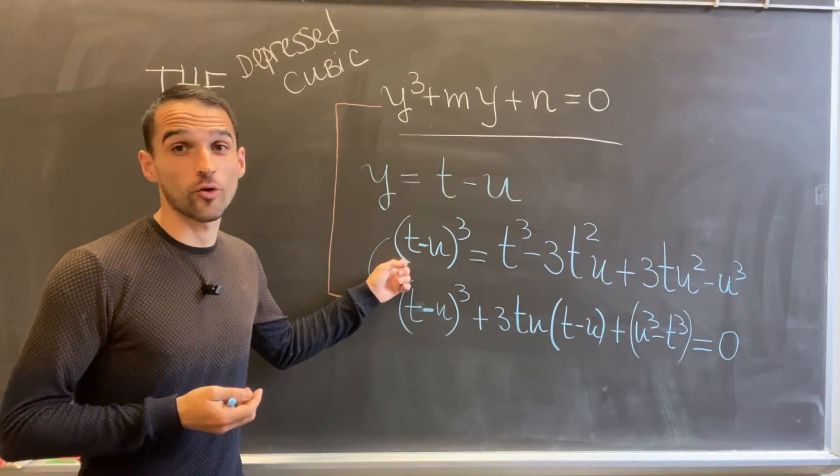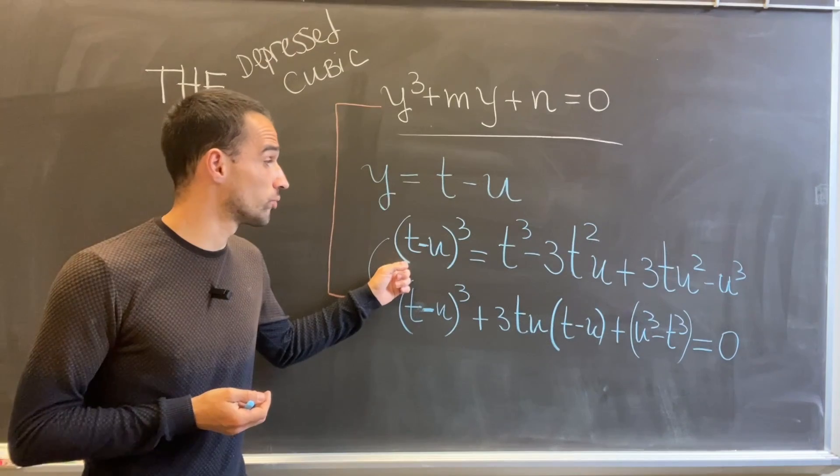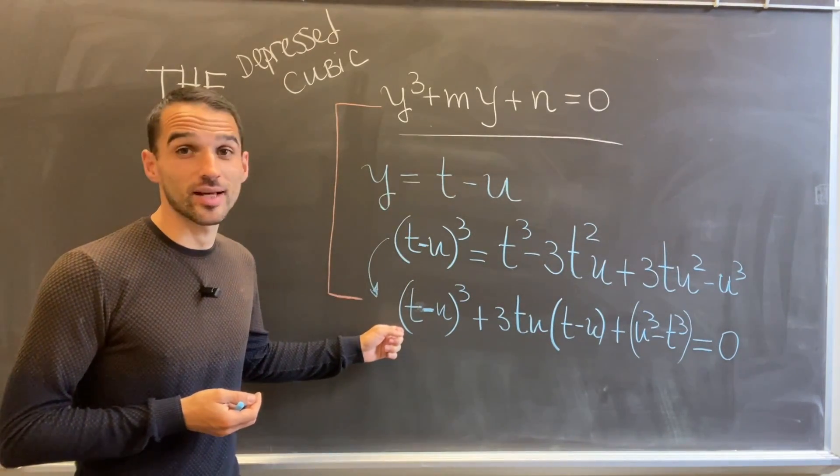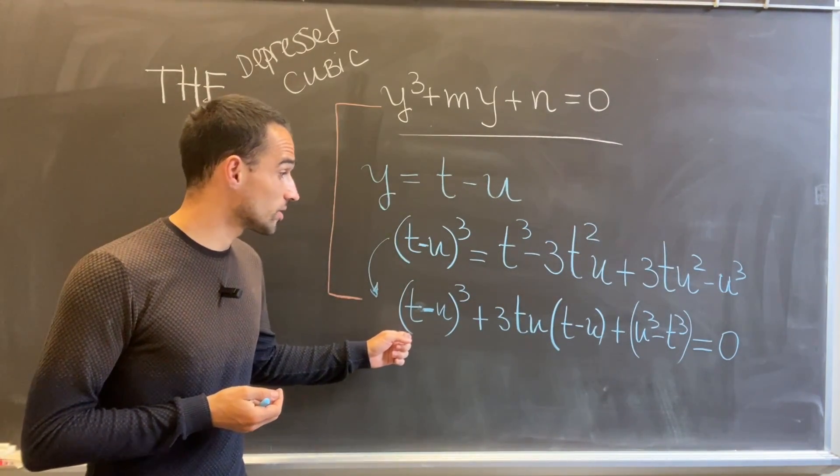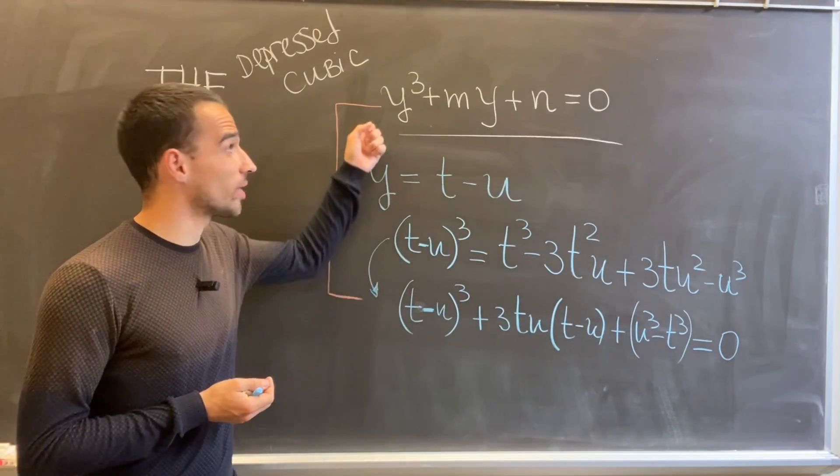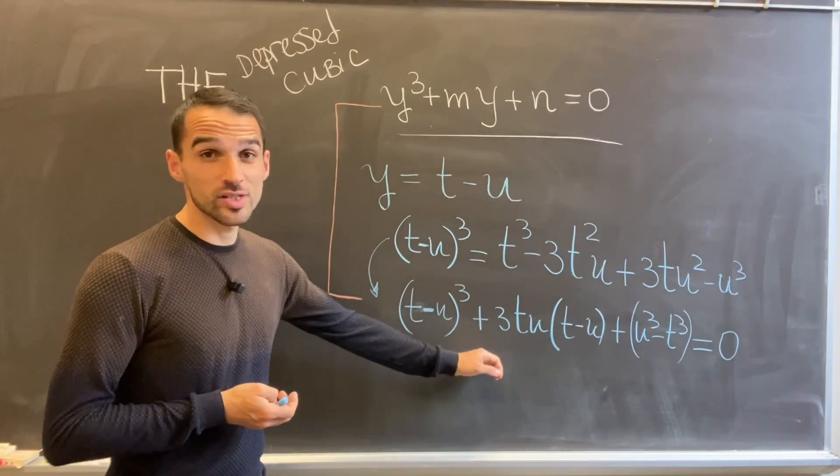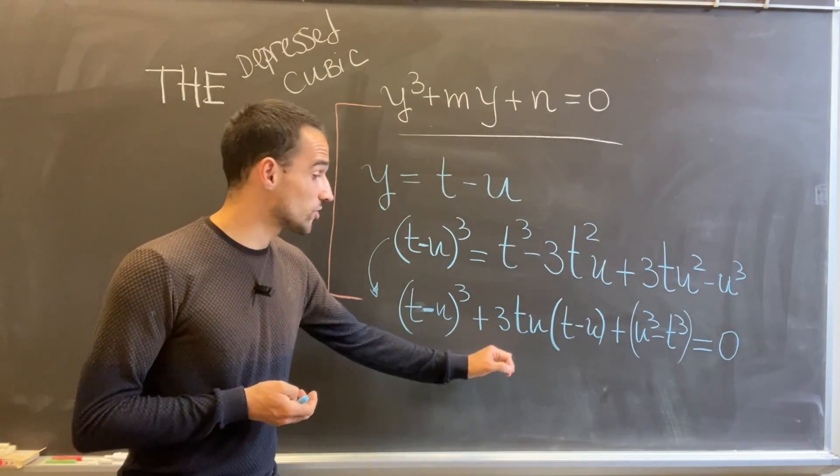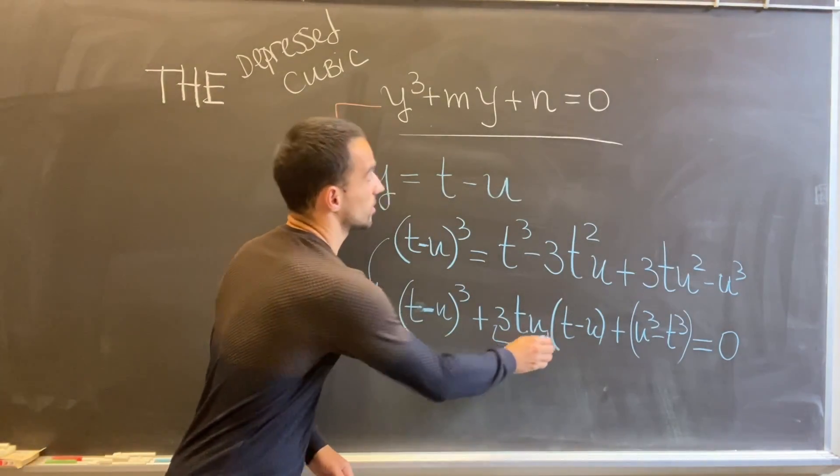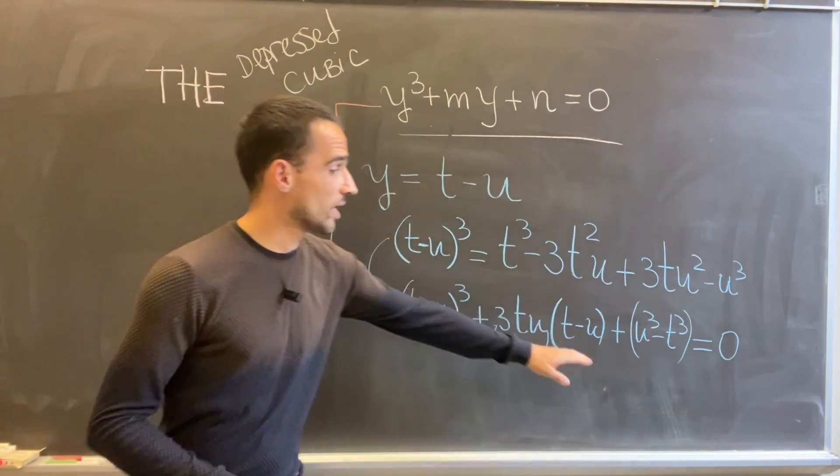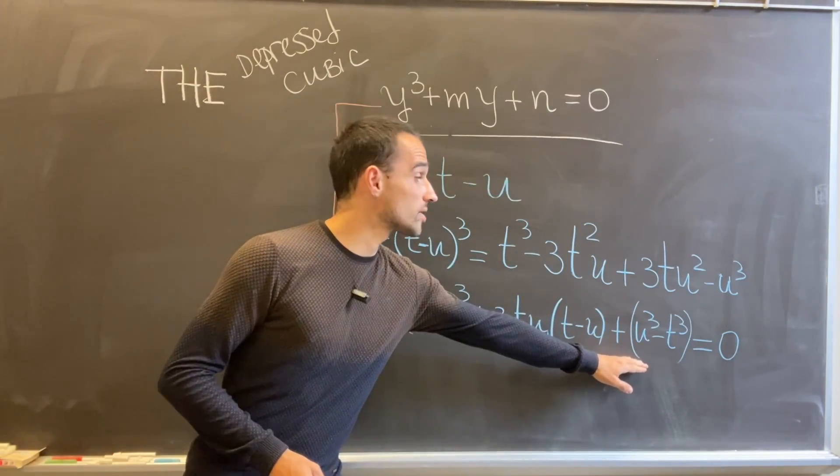Well, the thing is if I write y = t - u, I can use this formula for (t - u)³ and then rewrite it in that form. And now this is pretty similar to my depressed cubic, right? Instead of y I have t - u.